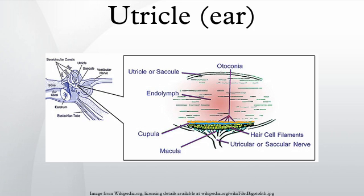The utricle, or utriculus, along with the saccule, is one of the two otolith organs located in the vertebrate inner ear. The utricle and the saccule are parts of the balancing apparatus located within the vestibule of the bony labyrinth. These use small stones and a viscous fluid to stimulate hair cells to detect motion and orientation. The utricle detects linear accelerations and head tilts in the horizontal plane.